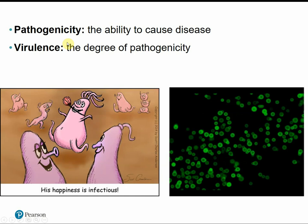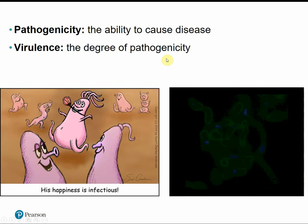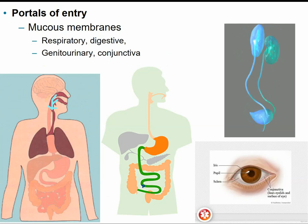When we talk about pathogenicity, we're just talking about the ability of a microorganism to cause disease — is it pathogenic or non-pathogenic? Virulence is the degree of pathogenicity, so some microbes are more virulent or more pathogenic than others.